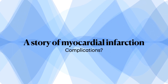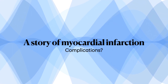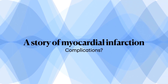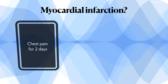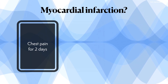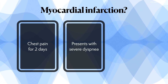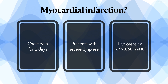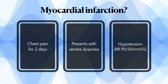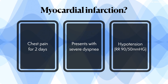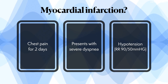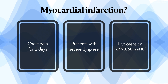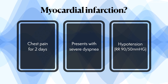Today we are talking about myocardial infarction and the horrible complications it can cause. In the specific case we have a woman who had chest pain for two days. She now presents with severe dyspnea and is in shock. The systolic blood pressure was only 90 millimeters of mercury.